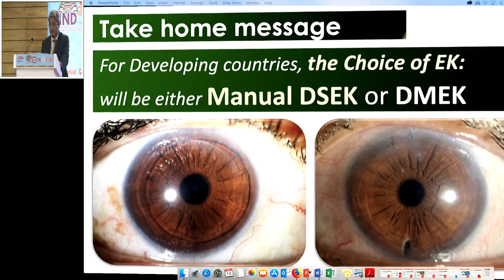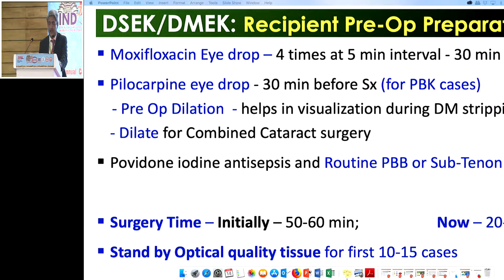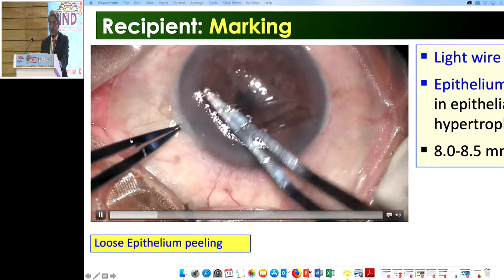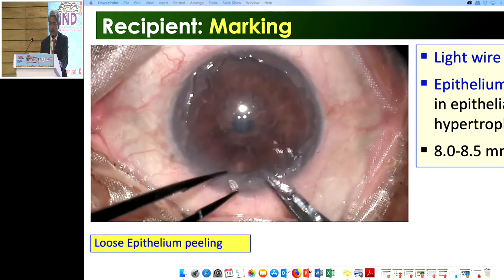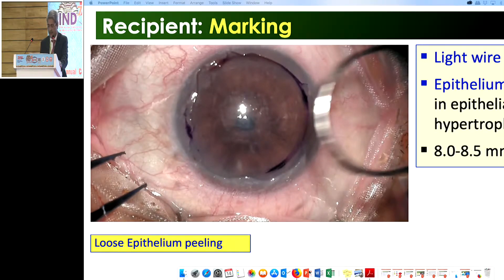We have two choices, and there are certain differences in basic steps between DSEK and DMEK — Rajesh will cover DMEK in more detail. Pre-op preparation is the same for both. Initial surgical time is about one hour for both, but later you can reduce it by 20–30 minutes. Keep standby optical-quality tissue for the first 10–15 cases. Always remove the epithelium for better visibility, then place a template mark — 8.5 mm for DMEK and 8 mm for DSEK.